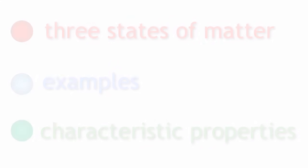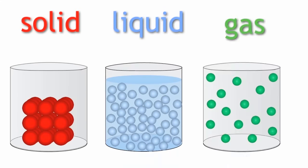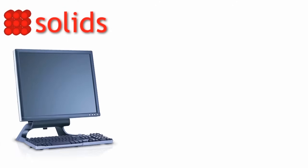The three states of matter are solid, liquid and gas. Let us look at solids. An example of a solid is your computer.